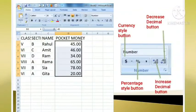In this image, you can see the pocket money is shown with the two decimal places. And the image on the right hand side shows the format numbers using the currency style, percentage style, comma style and decimal buttons provided on the formatting toolbar.